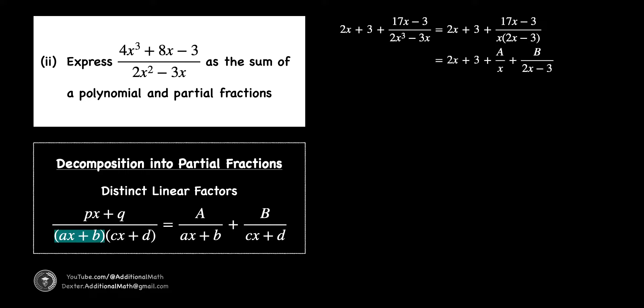It means that for our first distinct linear factor x in the denominator, we can write it as A over x. And for our second linear factor 2x minus 3, we can write it as B over 2x minus 3. By multiplying the partial fraction such that we have a common denominator of x and 2x minus 3, we will form this new equation. To get the same common denominator, we will multiply A by 2x minus 3. Then, we multiply B by x.